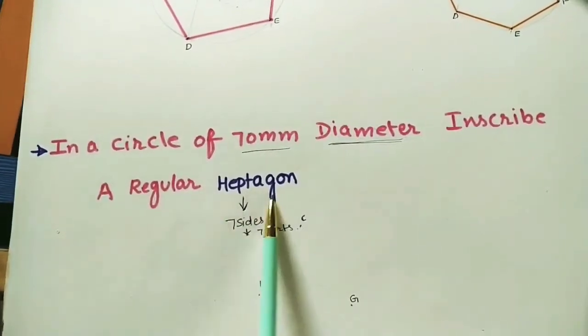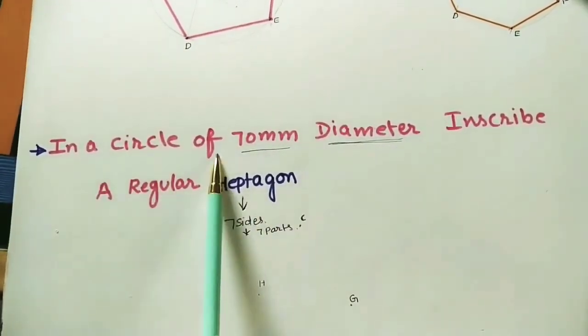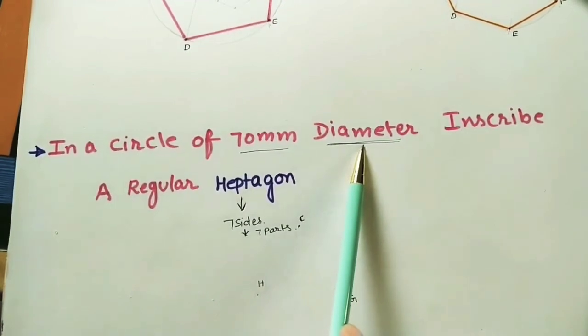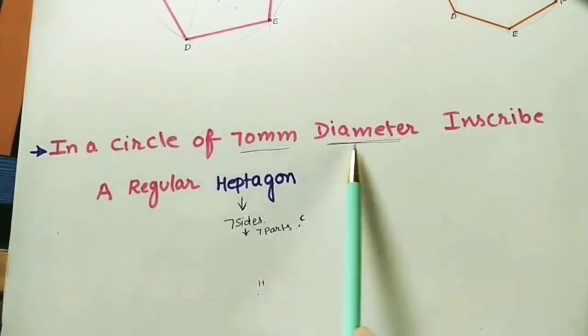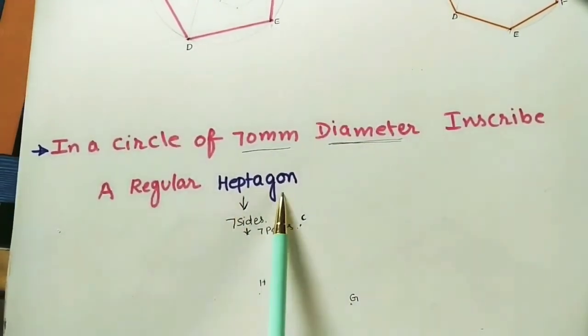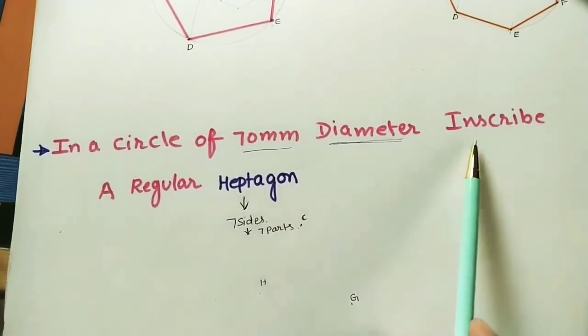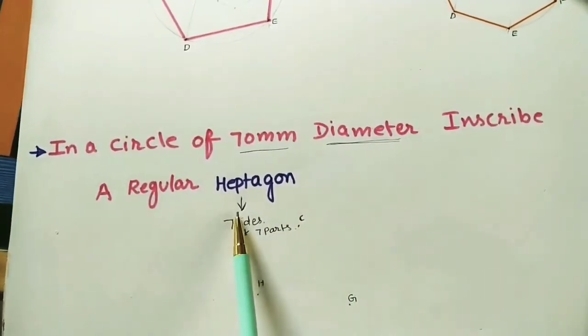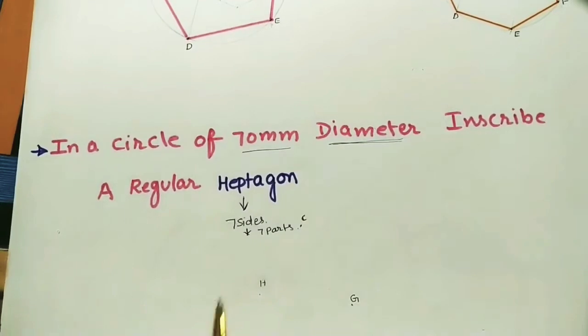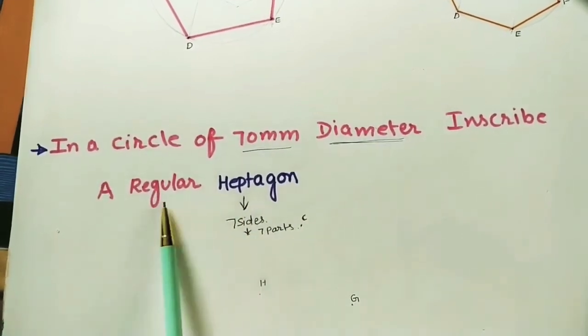In this class let us discuss how to draw a regular heptagon in a circle of 70mm diameter. First we need to draw a 70mm diameter circle, and in it we have to construct the heptagon. This method is called the inscribed circle method. As we know, a heptagon has seven sides. A regular heptagon means all seven sides have equal length.